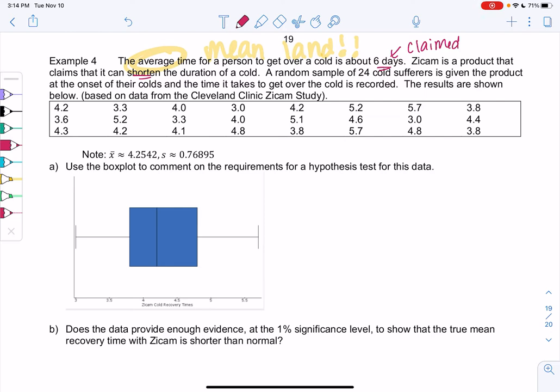So we'll randomly sample 24 cold sufferers, give them the product at the onset of their cold, and then see how long it takes for them to get over the cold. And then we have the results in the table below. And I already calculated S bar and X for you. We know that X bar is 4.2542 and S is 0.76895. But if you did one bar stat, that's what you would get.